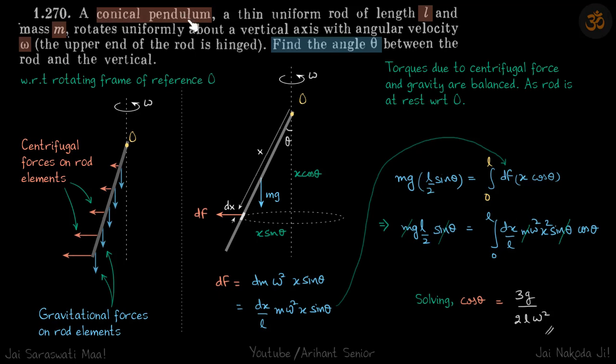We have a conical pendulum that consists of a rod of length L. It's rotating with omega. We need to find the angle theta the rod will make with the vertical.